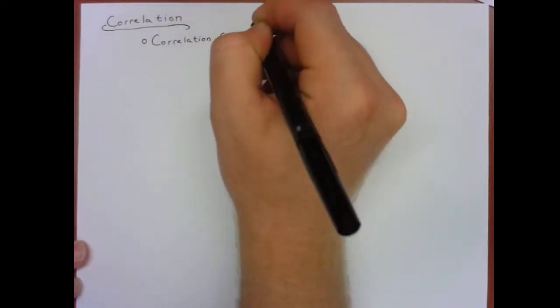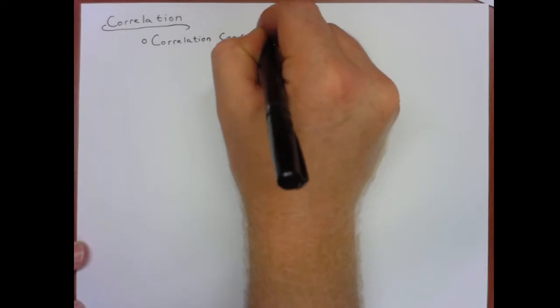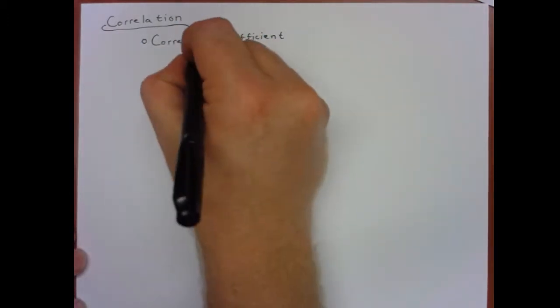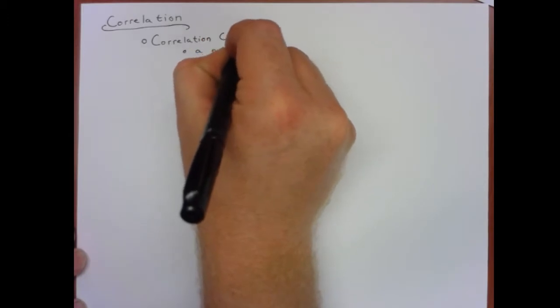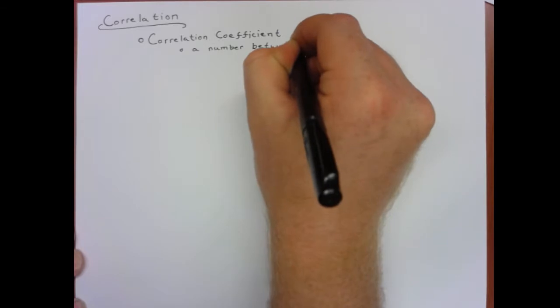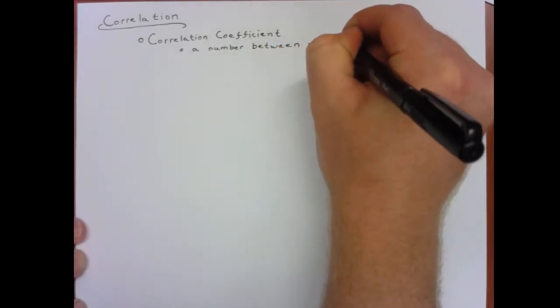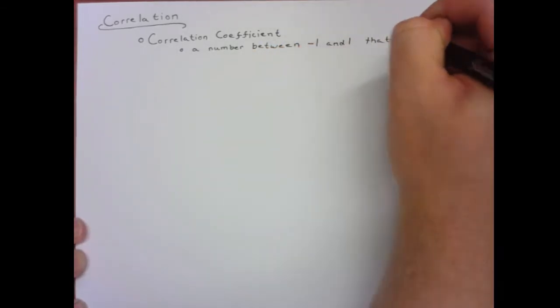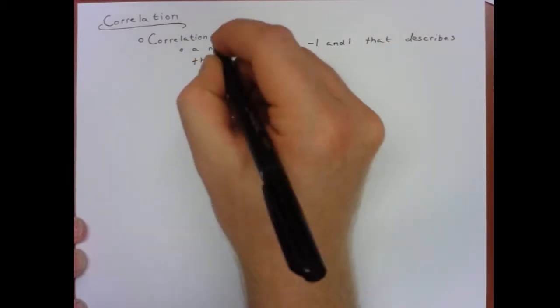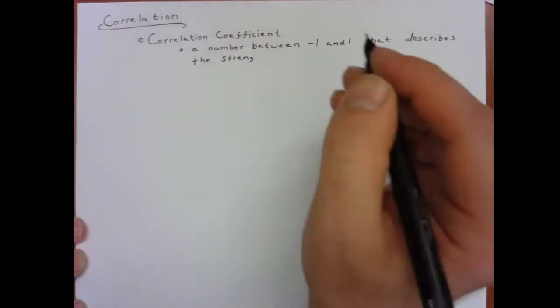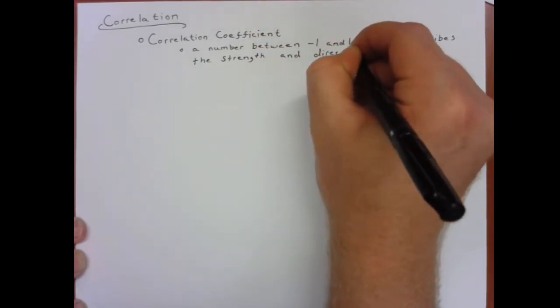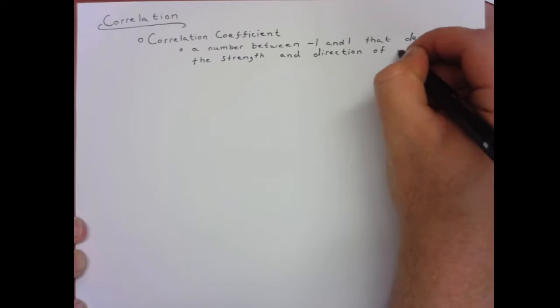The first step that we need to understand is that a correlation has one key statistic called a correlation coefficient. This is ultimately just another statistic, so we're boiling everything down to a single number. This number ranges between 1 and negative 1, and it describes the relationship between two different variables, specifically the strength of that relationship and the direction of that relationship.